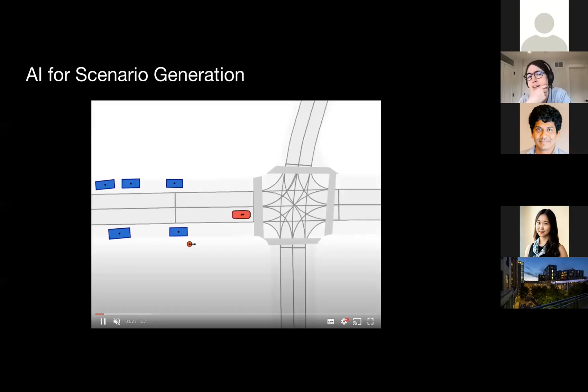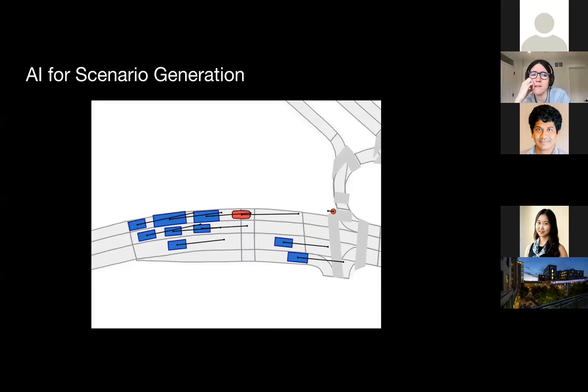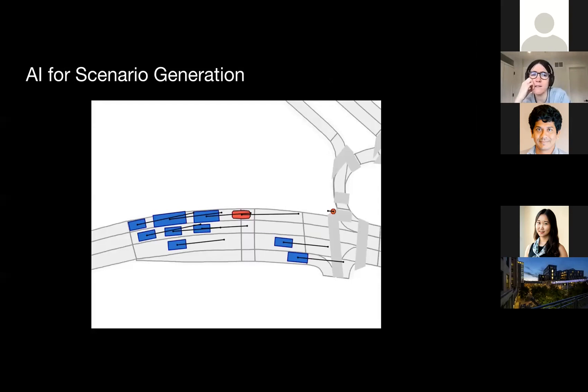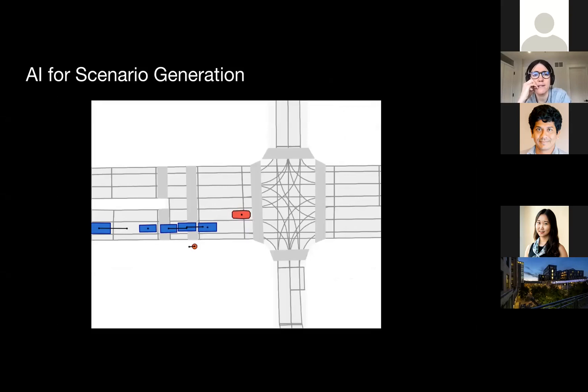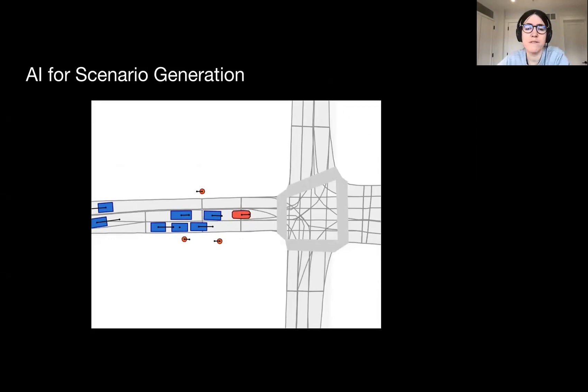Let me show you a video of this. As you can see, the ConvLSTM is much faster than this slowed-down demonstration. You can see it generating different actors: their positions, orientations, and velocity profiles. You can generate very realistic configurations — like parked cars, pedestrians walking around, and different vehicles going around. One thing it captures nicely is that humans tend to go in groups, which is more difficult to do with heuristics.